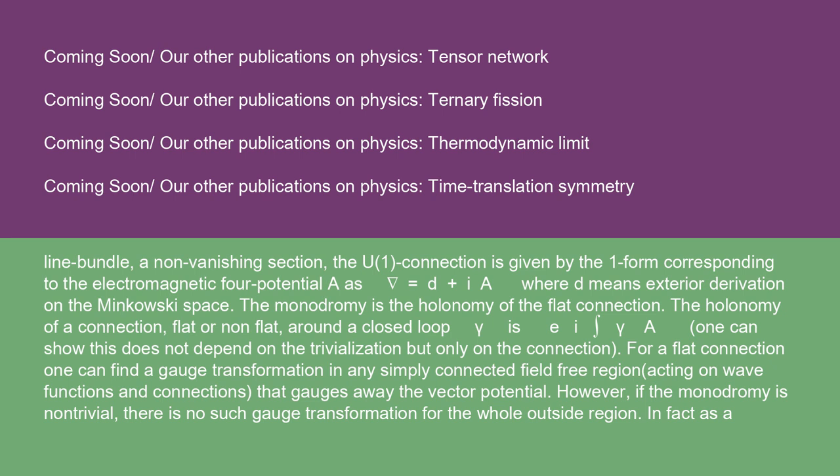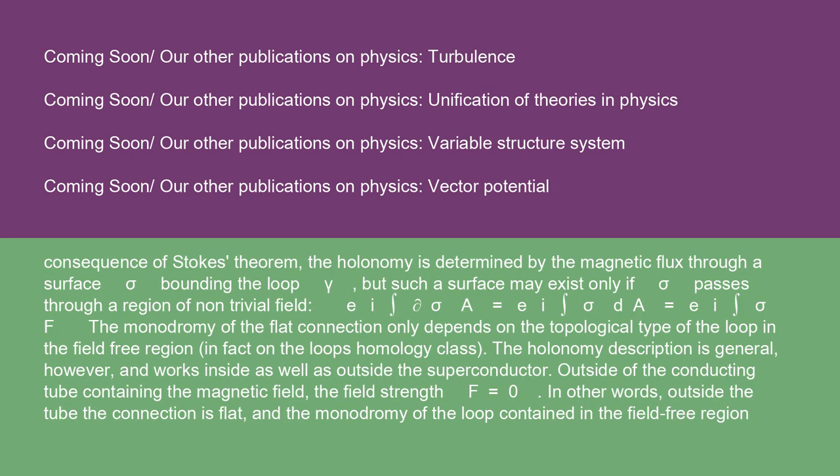However, if the monodromy is non-trivial, there is no such gauge transformation for the whole outside region. In fact, as a consequence of Stokes' theorem, the holonomy is determined by the magnetic flux through a surface σ bounding the loop γ. But such a surface may exist only if σ passes through a region of non-trivial field: e^(i∫_∂σ A) = e^(i∫_σ dA) = e^(i∫_σ F). The monodromy of the flat connection only depends on the topological type of the loop in the field-free region. In fact, on the loop's homology class. The holonomy description is general, however, and works inside as well as outside the superconductor.